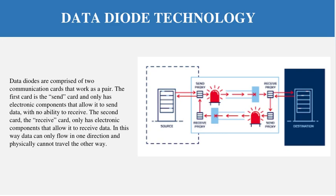The data diode is comprised of two communication cards. The first is the sender card, located on the source side, which sends data toward the destination. The sender card is only capable of sending data — it cannot receive. On the destination side, there is a receiver card, which can only receive data and cannot send.